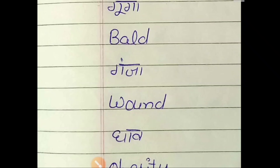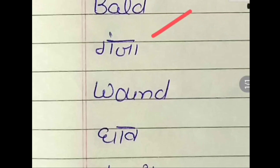Gunga — Bald. B-A-L-D. Bald. Ghaaw — Wound. W-O-U-N-D. Wound. Ghaaw, Wound.